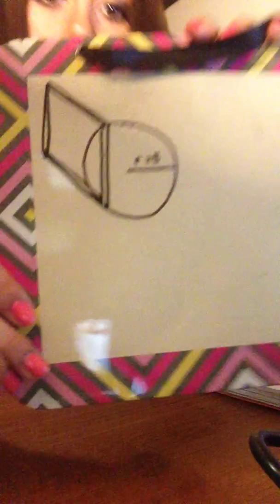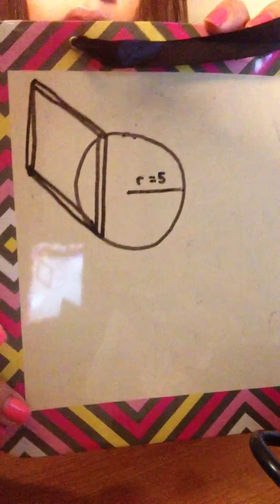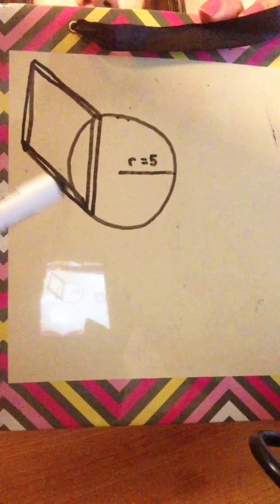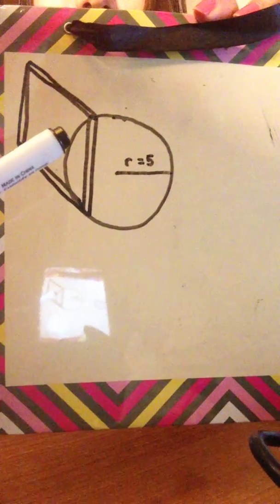If you draw it, it's going to look like a circle with radius 5, and coming out here is a square. Since you're looking for the volume, you're going to have the area of the square — so area is side squared — times the thickness of the slice, which is your change in x.